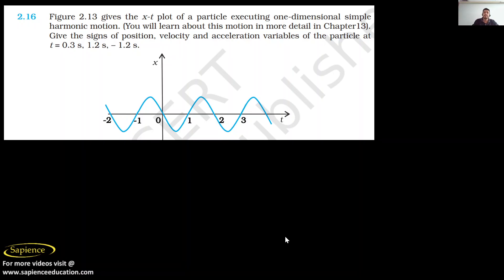Good evening everyone, welcome to Sapience Education. Today I am going to discuss question number 2.16. The figure gives the x-t plot of a particle executing one-dimensional simple harmonic motion. We need to give the sign of the position, velocity, and acceleration of the particle at t = 0.3 seconds, t = 1.2 seconds, and t = -1.2 seconds.